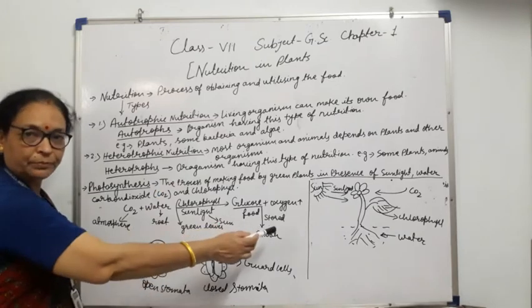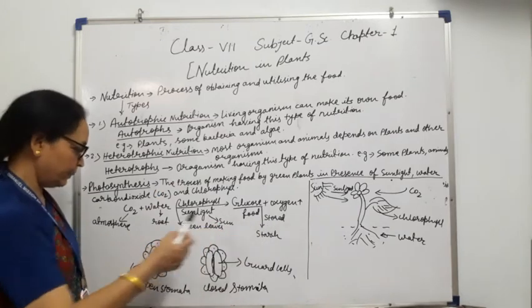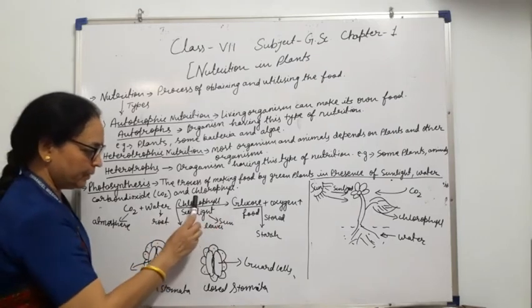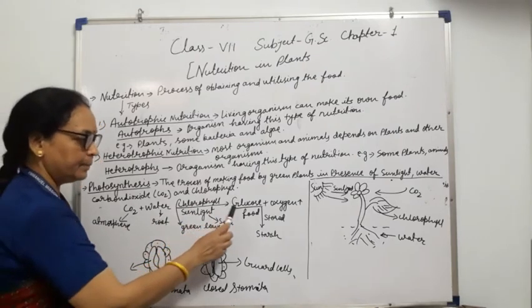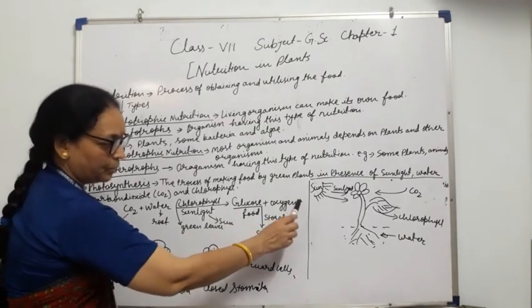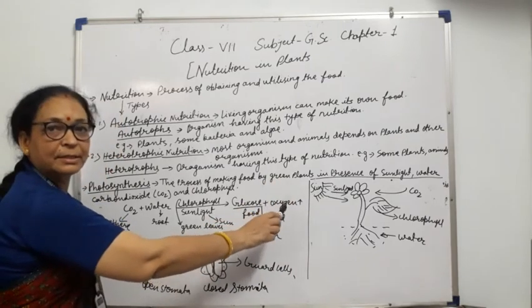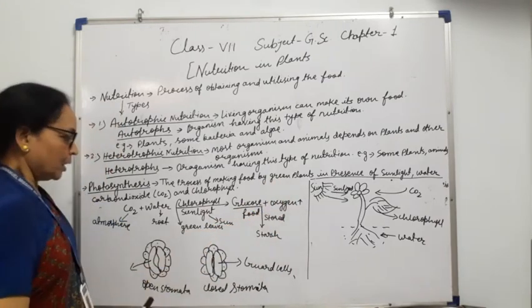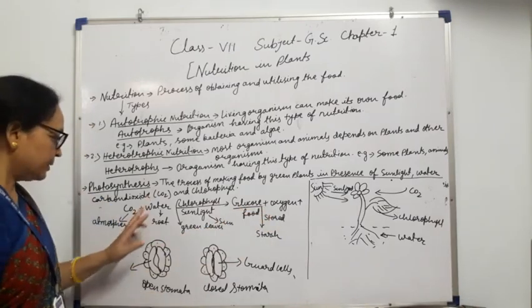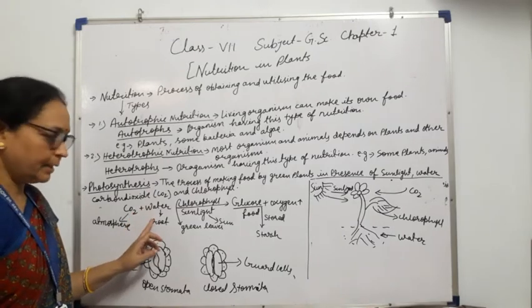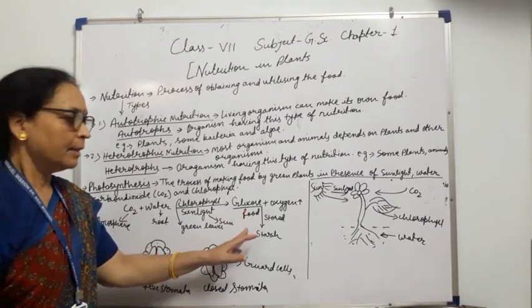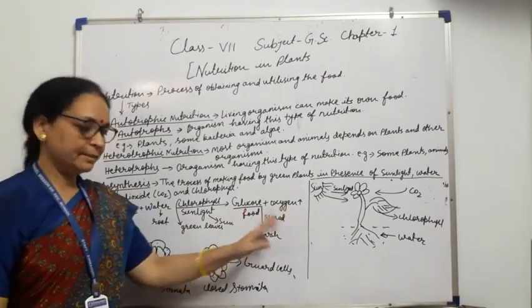Now you can see the equation of photosynthesis, which is also very important. Carbon dioxide plus water, in the presence of chlorophyll and sunlight, produces glucose and oxygen is released. The upward arrow symbol indicates that oxygen gas is released. So this is the photosynthesis equation.